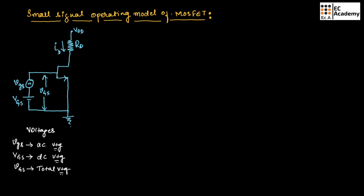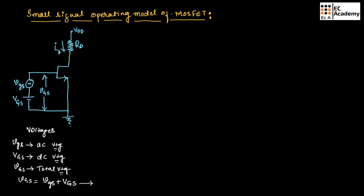The total voltage will be equal to DC voltage plus AC voltage. Always remember: AC components are represented by small letters and DC components are represented by capital letters. The total voltage is given by small v capital GS, so we can write vGS = vgs + VGS. Let us call this equation number 1.